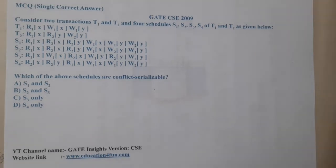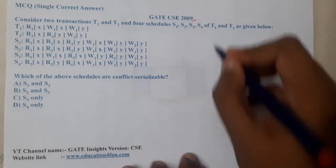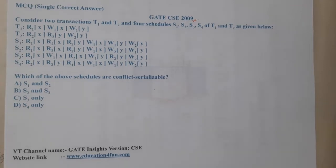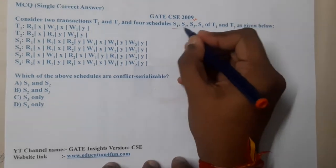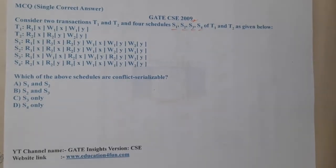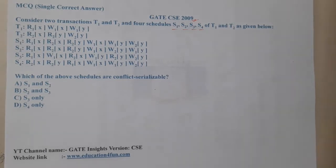Hello guys, we are back with our next lecture. This question belongs to GATE CSC 2009. We have two transactions T1 and T2, and four schedulers S1, S2, S3, and S4. The question asks which of the above schedulers are conflict serializable.